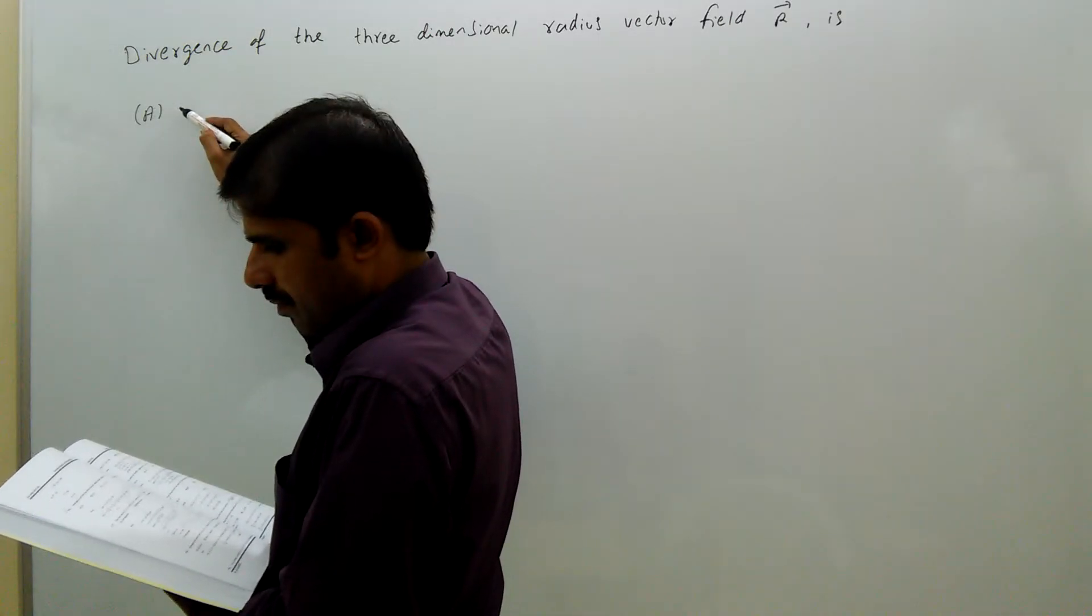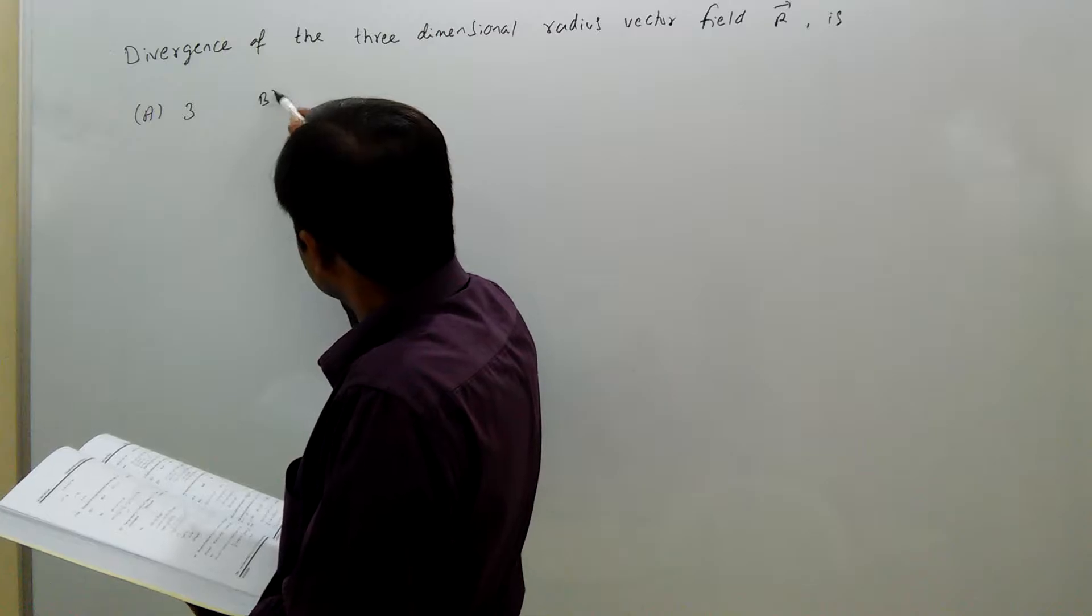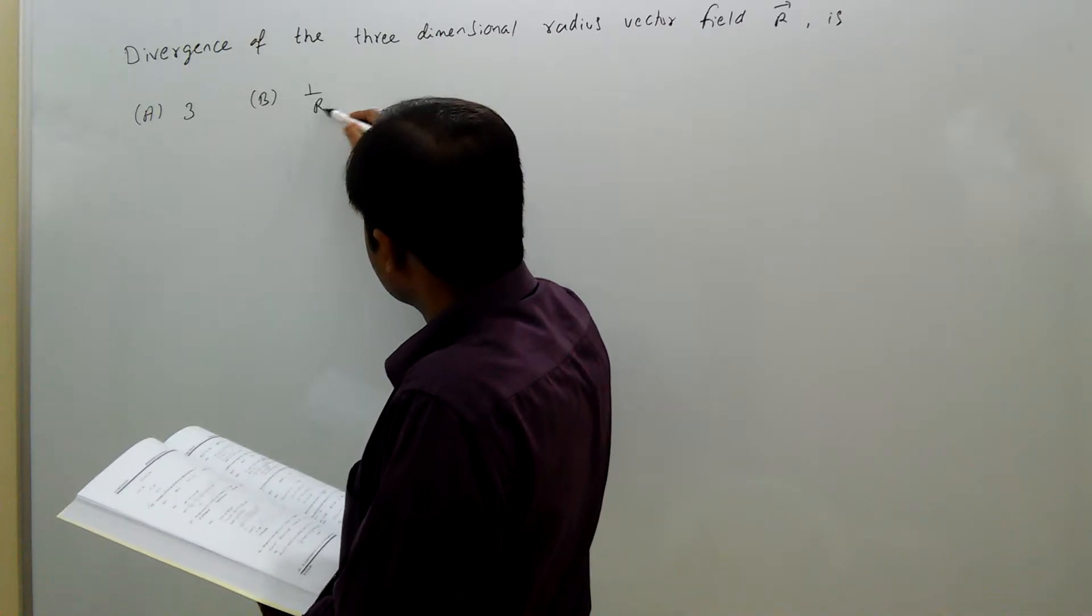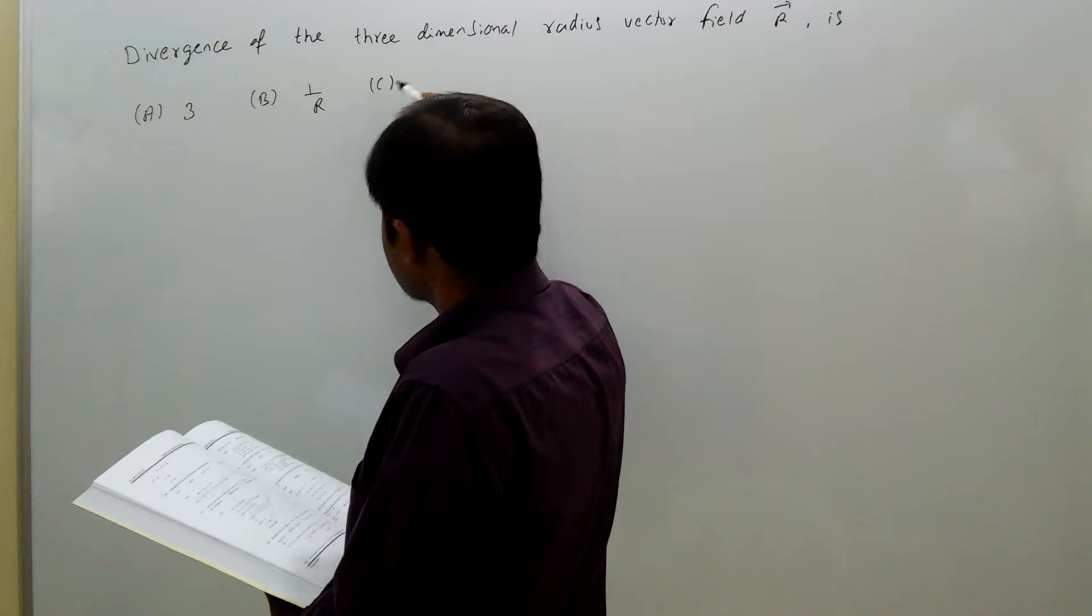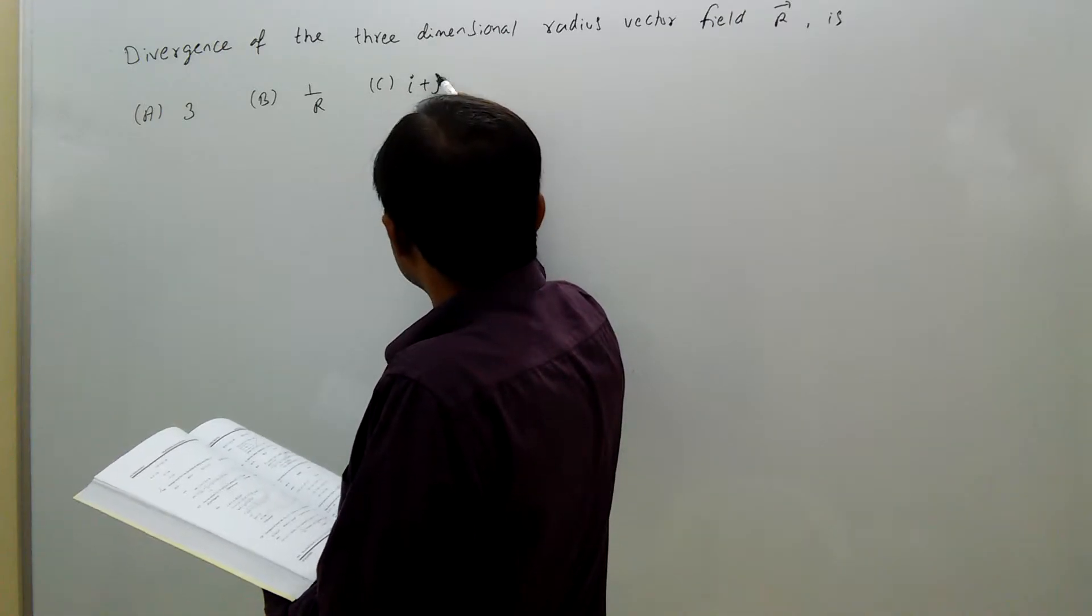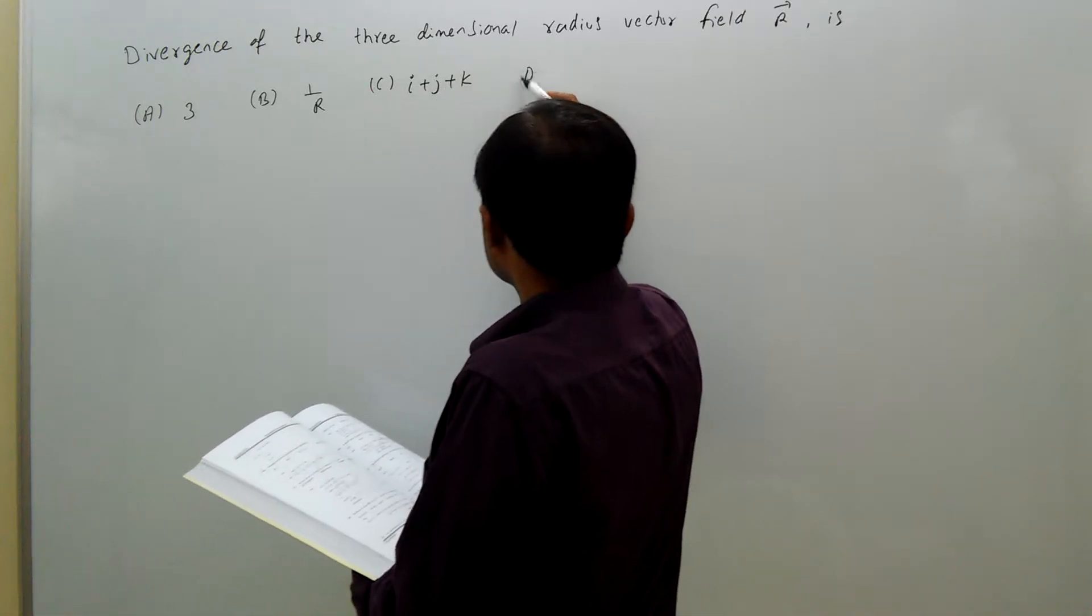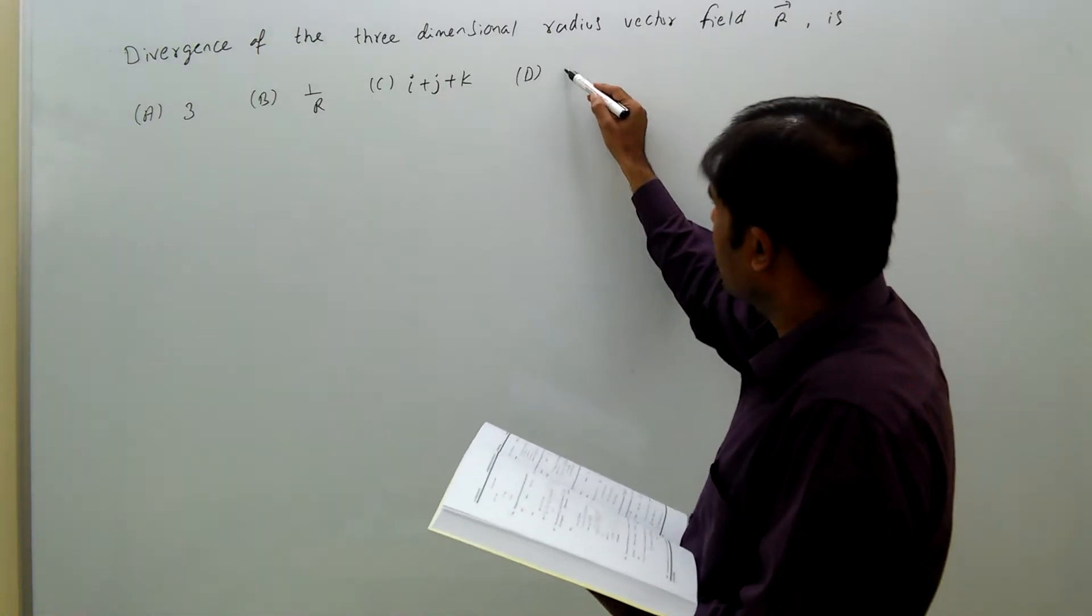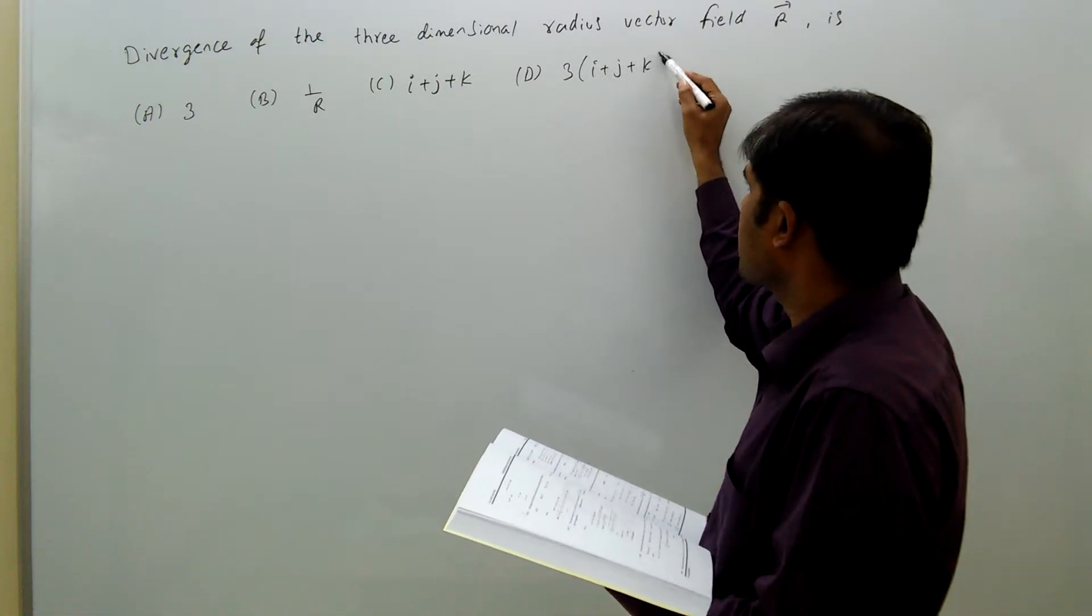Option A: 3. Option B: 1 by R. Option C: I plus Z plus K. Option D: 3 times (I plus Z plus K).